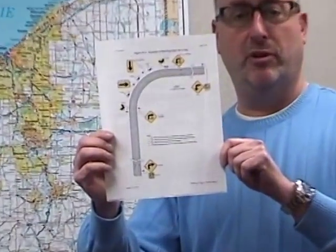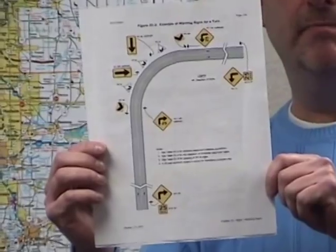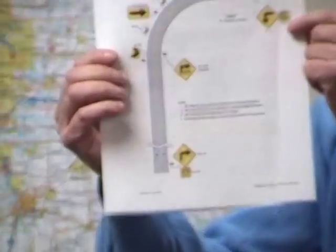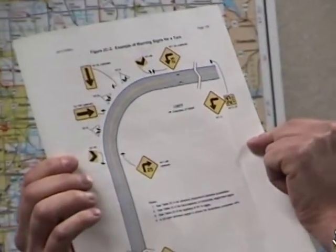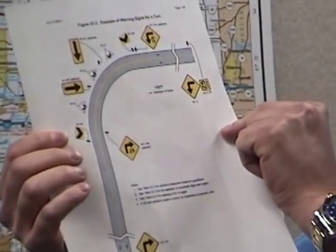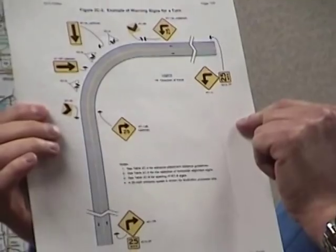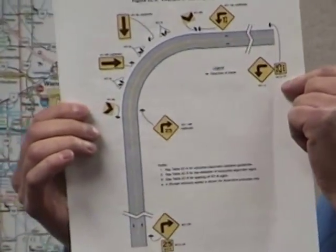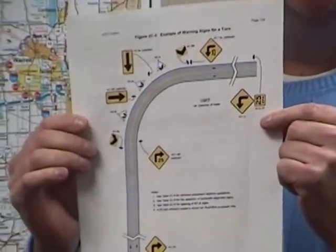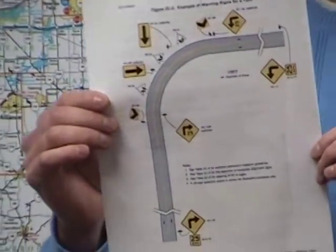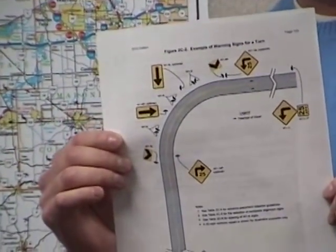When I'm talking about the signs for a curve, here's a picture from our OMUTCD, the Ohio Manual of Uniform Traffic Control Devices. It shows a specific sign — the advisory speed plaque, which is sign W13-1P. It's a very important sign because it lets drivers know what speed they should bring down to as they traverse through the curve.